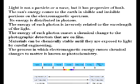The energy of each photon is inversely related to the wavelength of the light. The energy of each photon causes a chemical change to the photographic detectors that are on film. Materials can be chemically stable until they are exposed to light by careful engineering. The process in which electromagnetic energy causes chemical changes to matter is known as photochemistry.